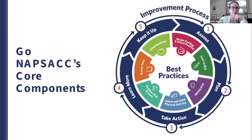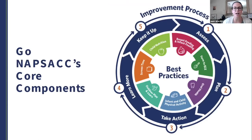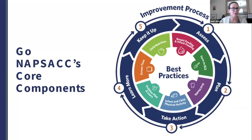The components of Go Knapsack include an improvement process and modules built around best practices. First, you assess what's currently happening. The content areas within Go Knapsack include breastfeeding and infant feeding, farm to ECE, oral health, infant and child physical activity, outdoor play and learning, screen time, and child nutrition. Each area has an assessment piece you use to assess what you're currently doing in your program.